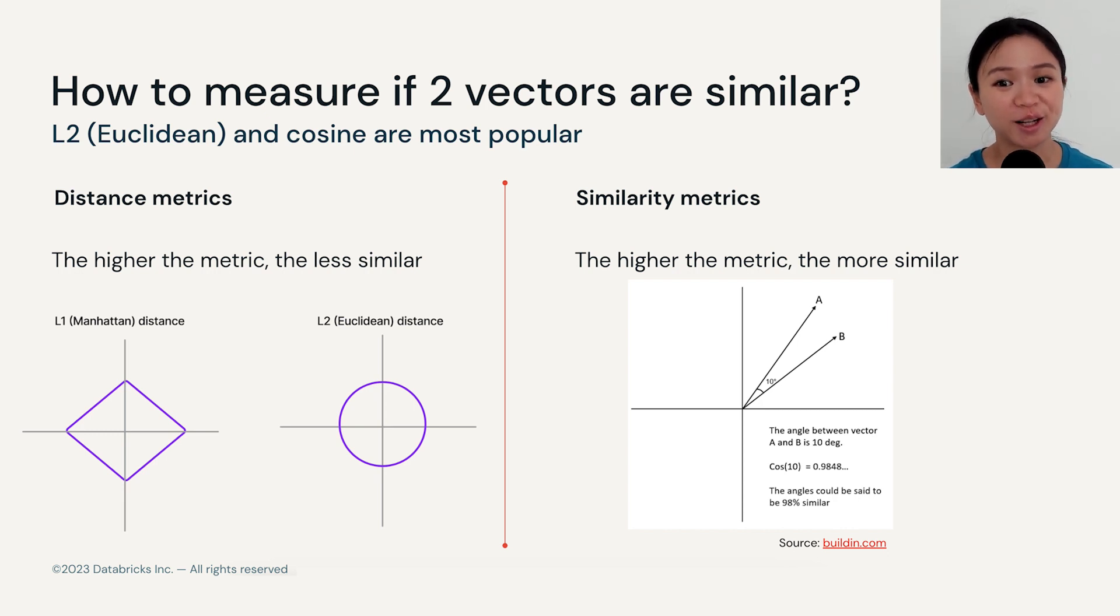It's also worth calling out that when you use either L2 distance or cosine similarity on normalized embeddings, they produce functionally equivalent ranking distances for your vectors. If you are interested in that, feel free to search for mathematical proof online.